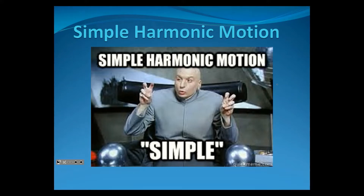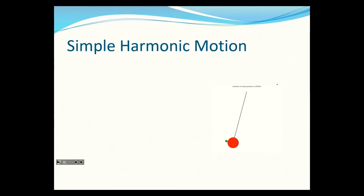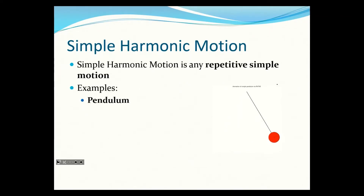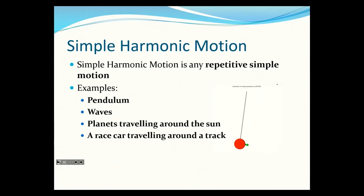Simple harmonic motion is like a pendulum. Simple harmonic motion is any simple repetitive motion — it could be a pendulum, it could be a wave, it could be planets traveling around the sun, or it could be a race car traveling around a track where it just repeats over and over again.